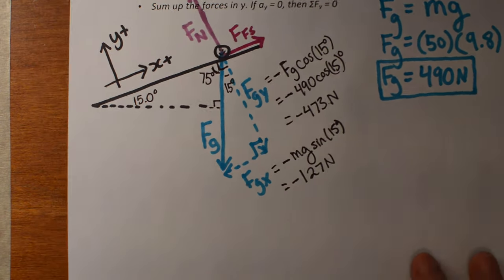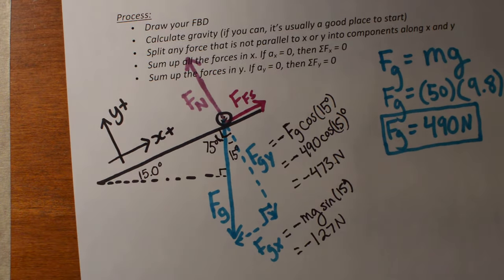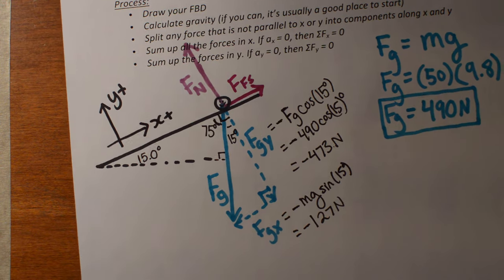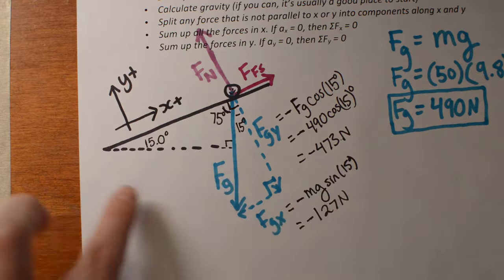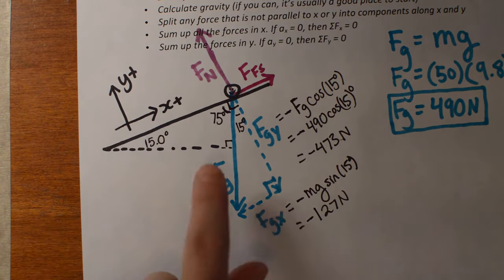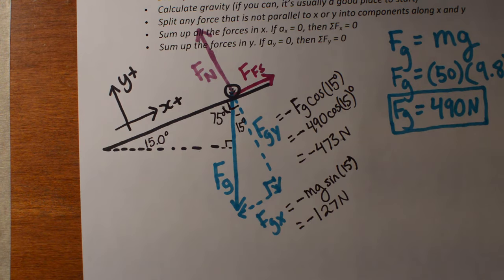That's my first step: find a force if I can. If you don't know the force of gravity, that's fine — just use variables. Your next job is to split everything into components not parallel to x and y, which was just fgy and fgx for us. Then sum up all the forces in x and sum up all the forces in y, setting each sum equal to zero.